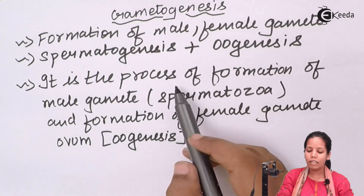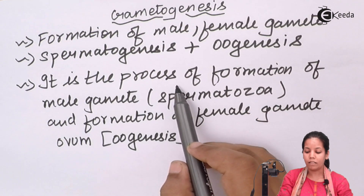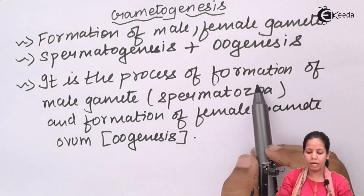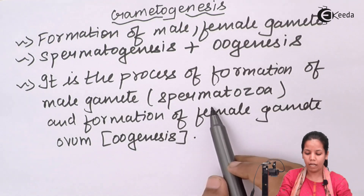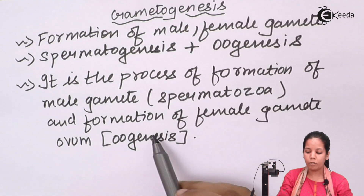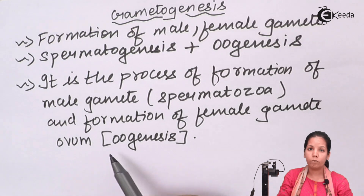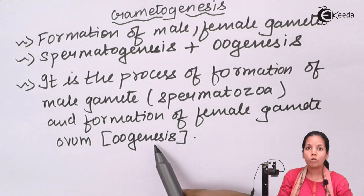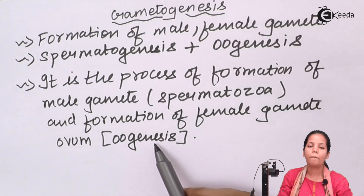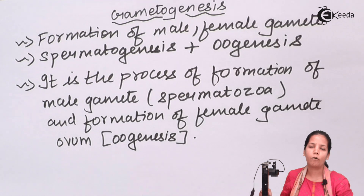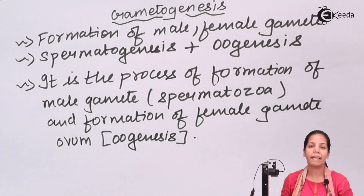The formation of the male gamete, which is the spermatozoon, and the formation of the female gamete, which is the ovum, together constitute gametogenesis. Basically, the formation of these haploid structures — both sperm and egg — is nothing but gametogenesis.